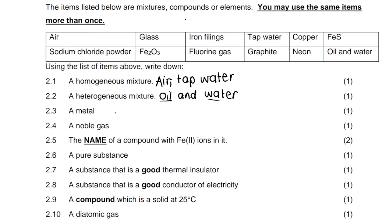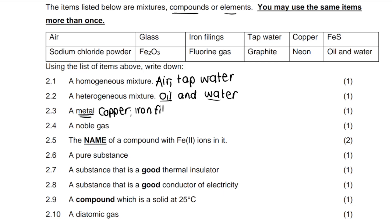For a metal from the list, copper is a metal. Remember, metals are on the left-hand side of the periodic table, excluding hydrogen. The periodic table can be divided into left and right by a step that separates the two sides. So the answer is copper, or you could also say iron filings, because iron is also a metal.